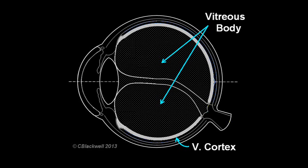This part is important because it is attached to the entire inside surface of the retina. That attachment is the key feature in problems caused by the vitreous.